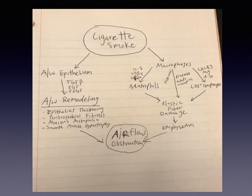In the figure that I drew here, the macrophages are activated by cigarette smoke and recruit neutrophils and CD8 lymphocytes to cause elastolysis and emphysema. Similarly, cigarette smoke activates the airway epithelium to trigger airway remodeling, and both of these processes result in airway obstruction.